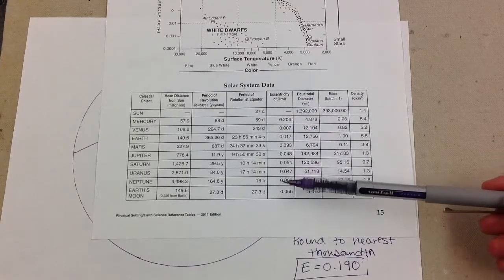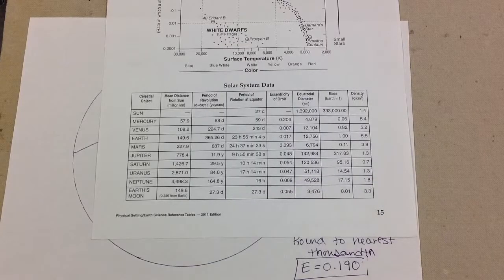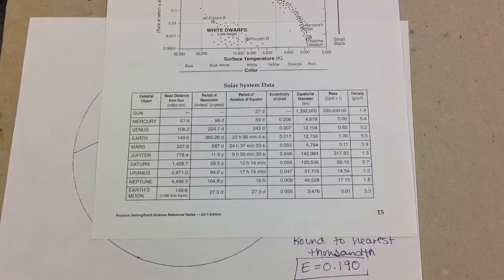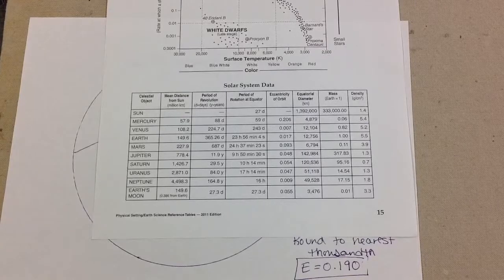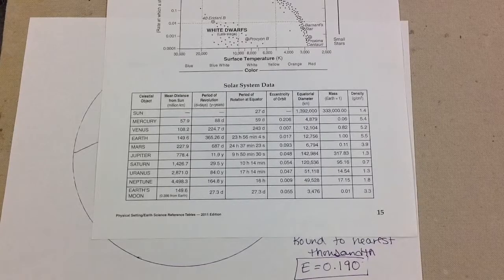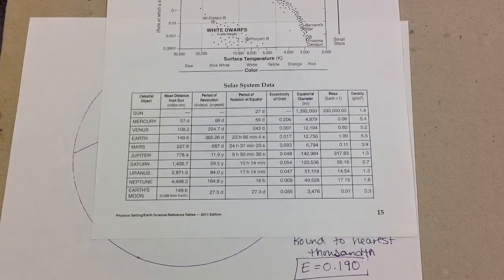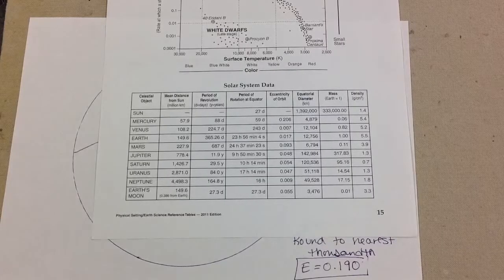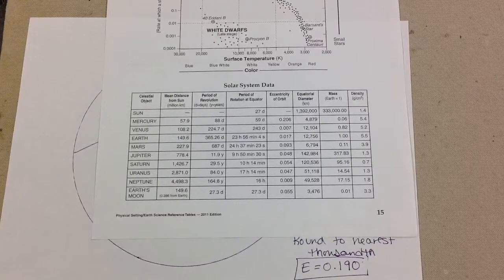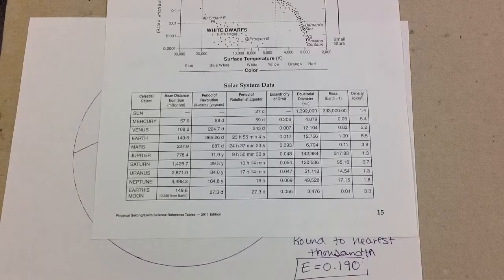And remember, eccentricity is a value that is between 0 and 1, 0 being a circle, 1 being a line. And the closer you are to the value of 1, the more eccentric or more elongated the ellipse that you will be.